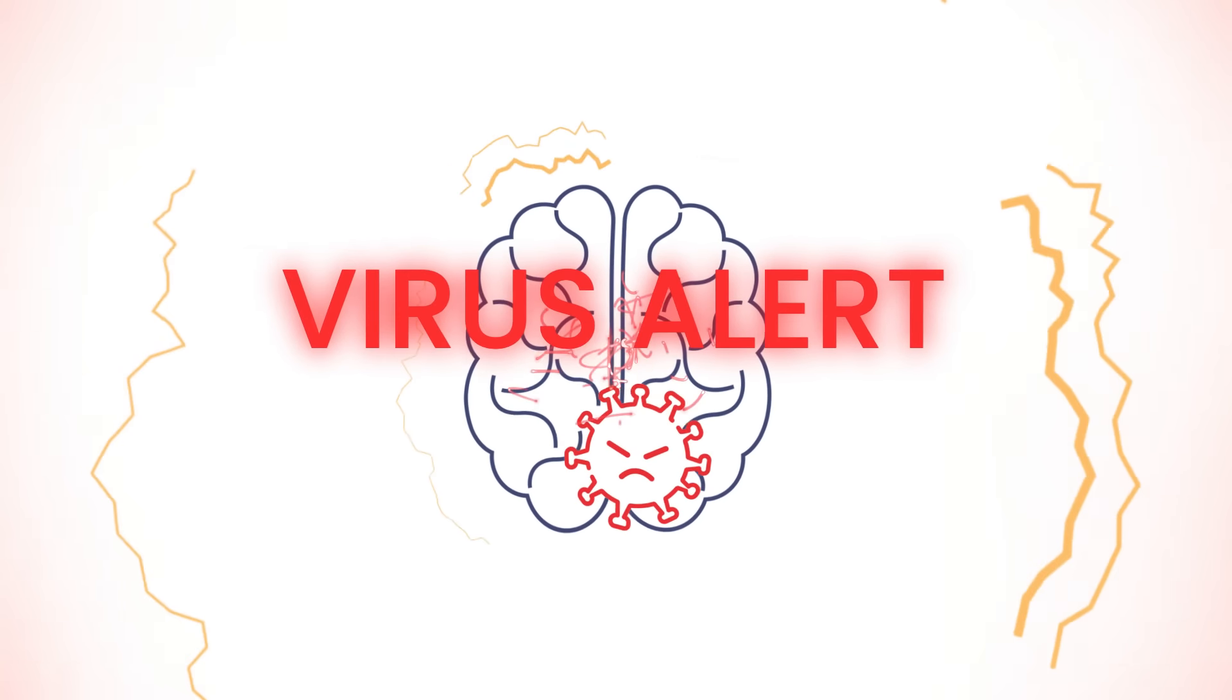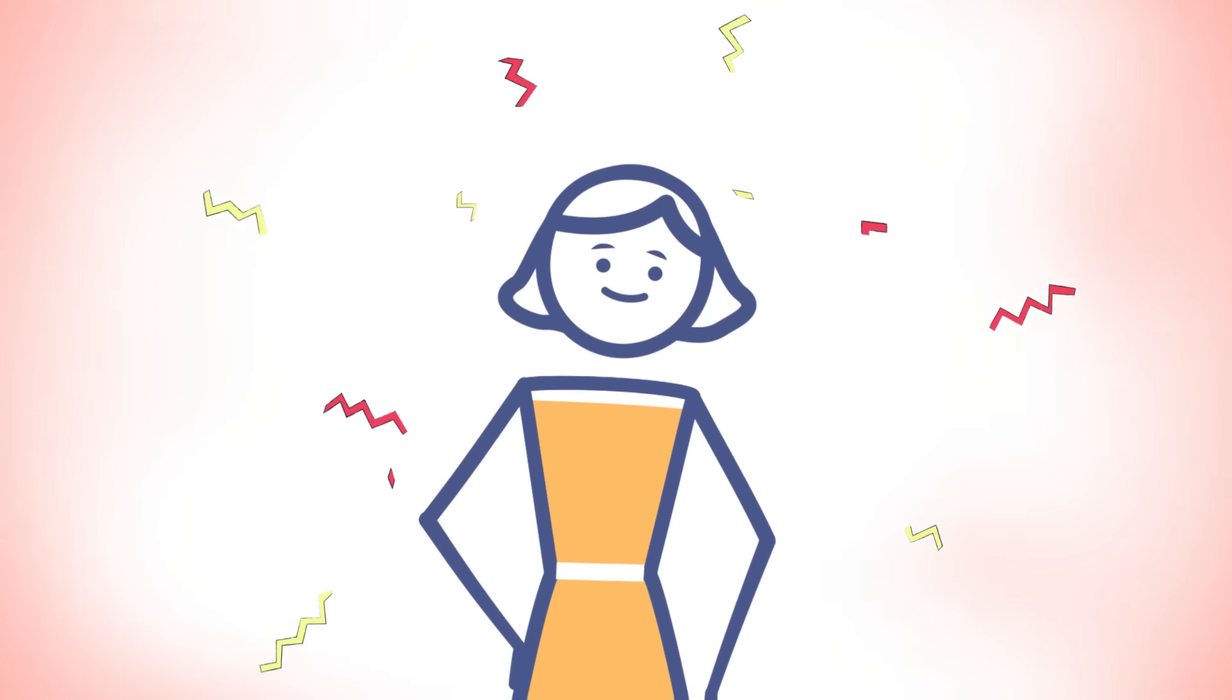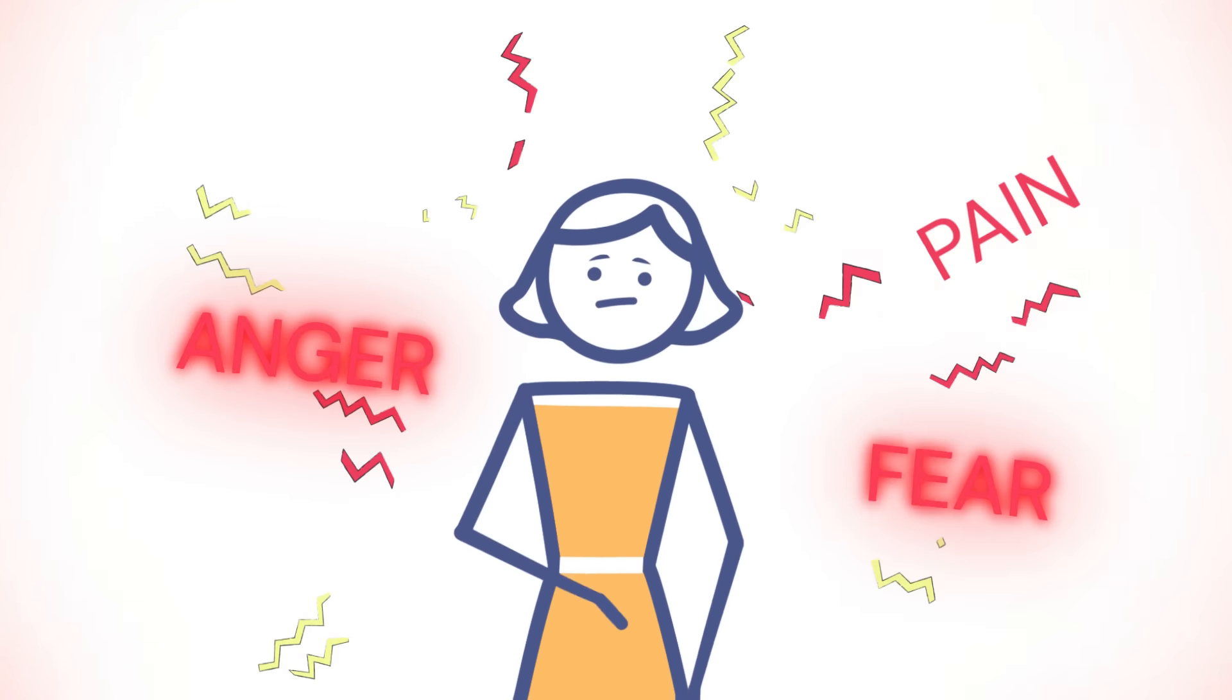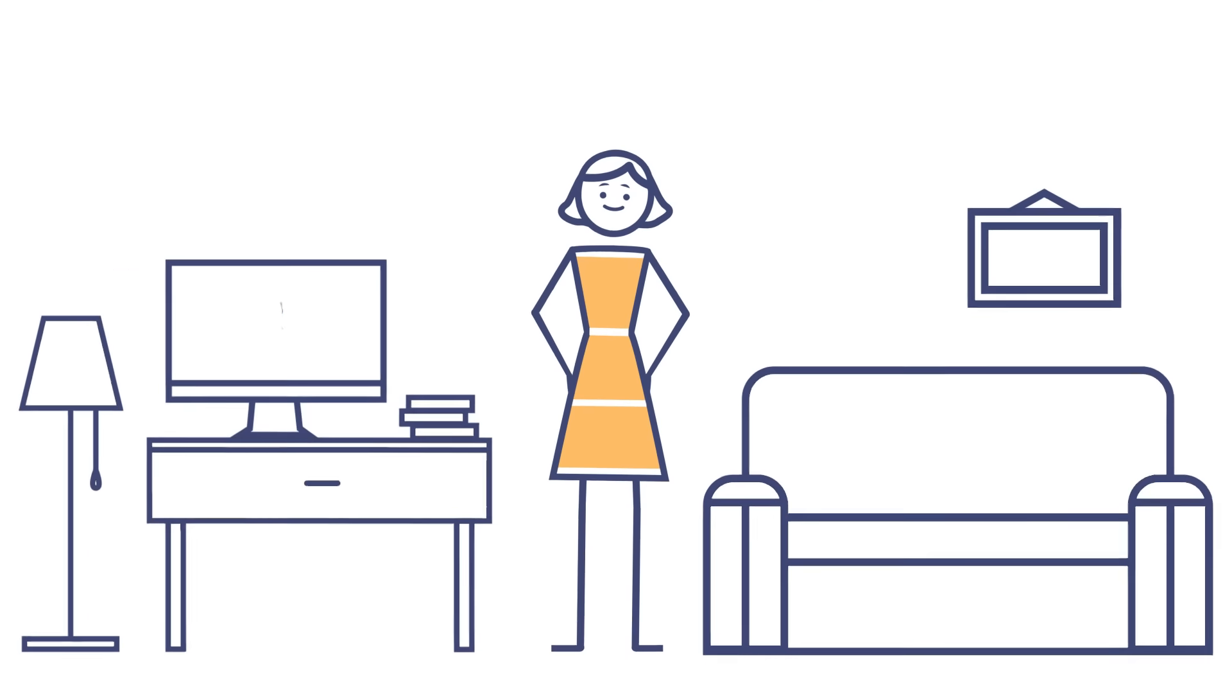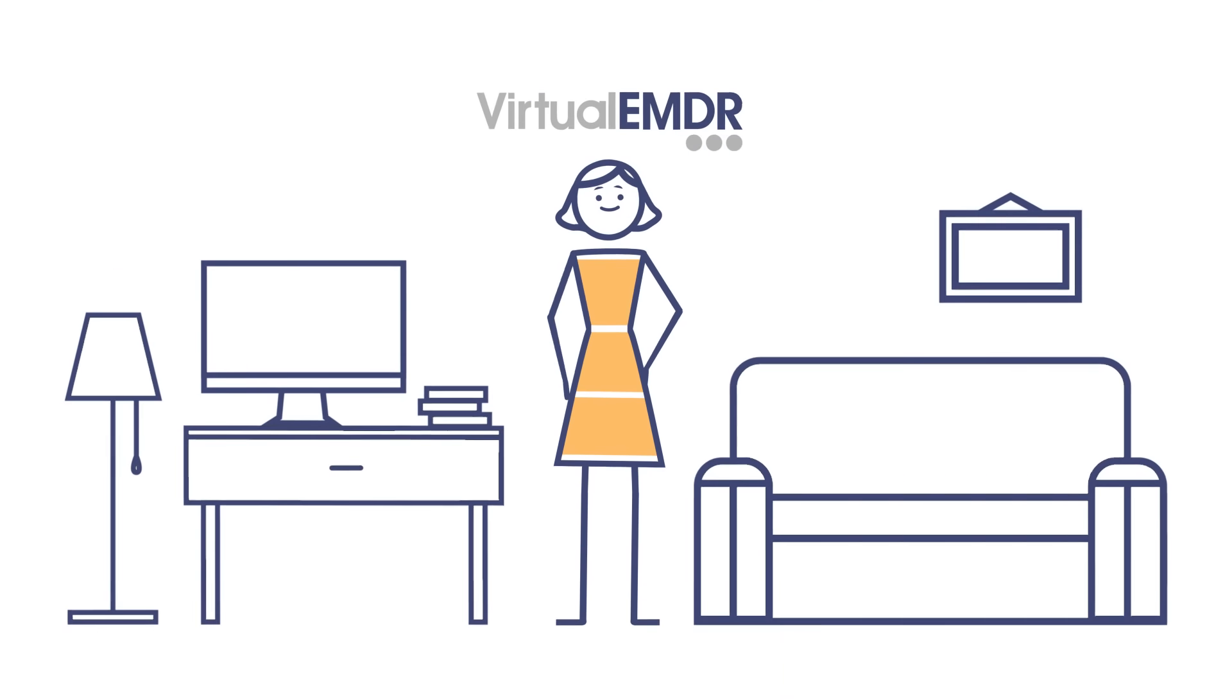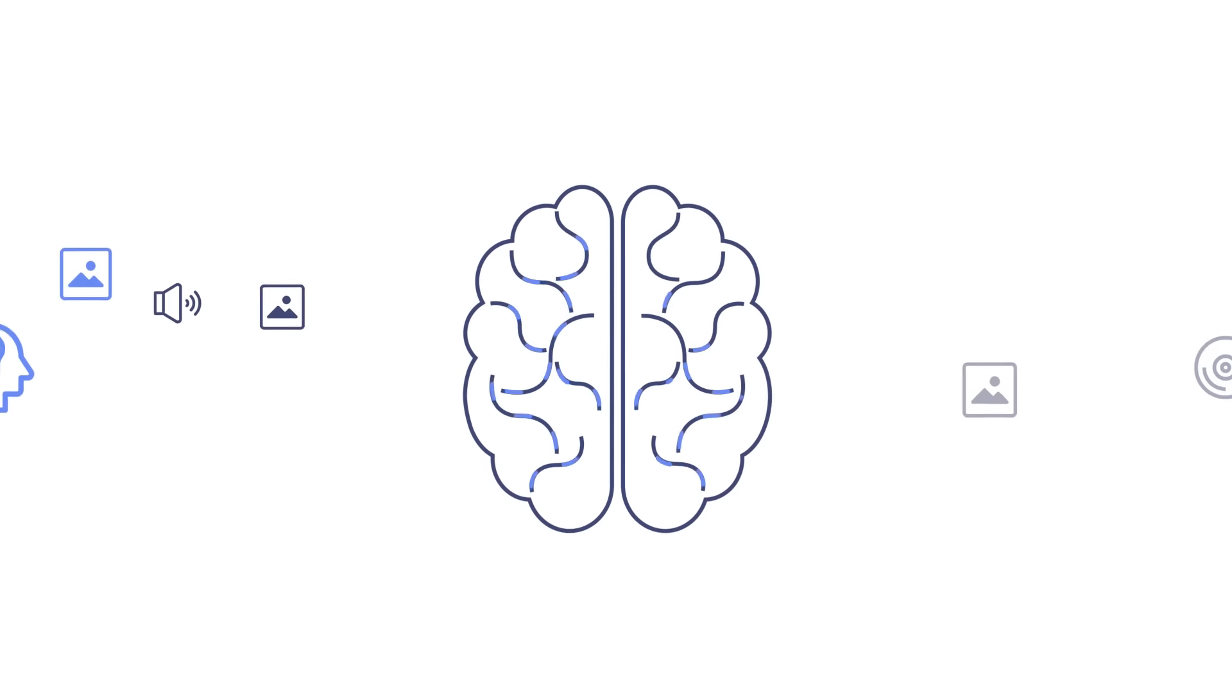The memories replay and replay, and because the emotions have not been processed, each time you feel pain, anger, and fear. Fortunately, Eye Movement Therapy can reset your brain. By replicating REM sleep, it stimulates your brain to start processing the traumatic memory.